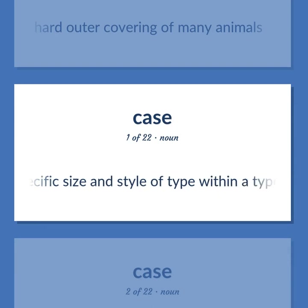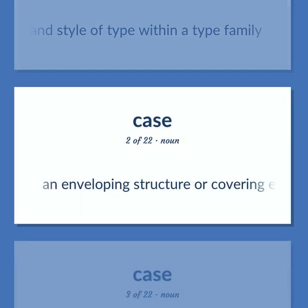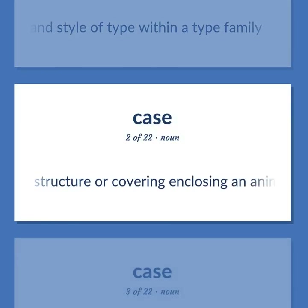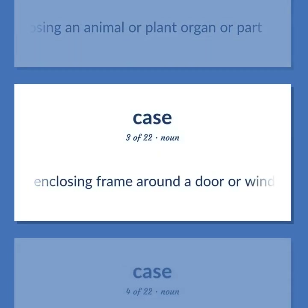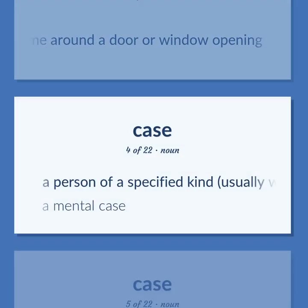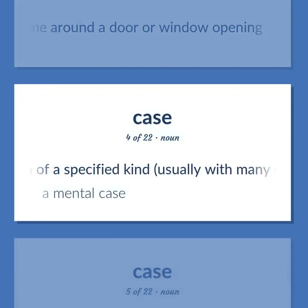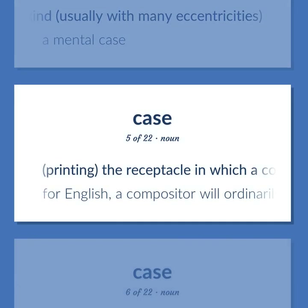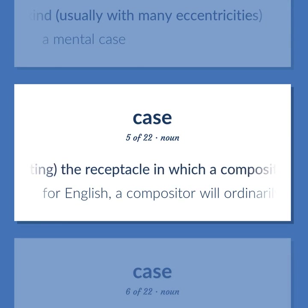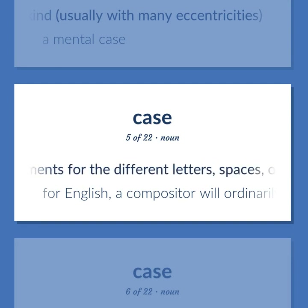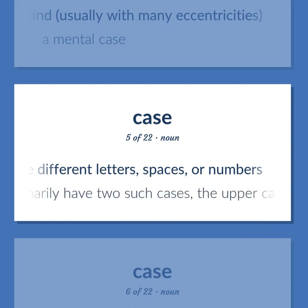Case (printing): A specific size and style of type within a type family. An enveloping structure or covering enclosing an animal or plant organ or part. The enclosing frame around a door or window opening. A person of a specified kind, usually with many eccentricities — a mental case. The receptacle in which a compositor has his type, divided into compartments for different letters, spaces, or numbers. For English, a compositor will ordinarily have two cases: the upper case containing capitals and the lower case containing small letters.